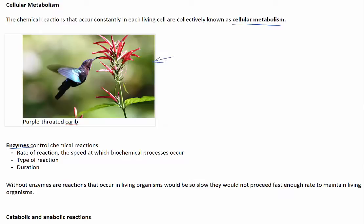The rate of cellular metabolism varies amongst organisms. For example, the purple-throated carib, which is a type of hummingbird, has a very high metabolism, which you might expect considering it uses so much energy to stay in flight and to move its wings so rapidly. The reactions in cellular metabolism do not occur randomly — they are all controlled and regulated by enzymes. Enzymes are responsible for controlling the rate, type, and duration of chemical reactions. Without enzymes, the reactions in living organisms would be too slow to maintain life.